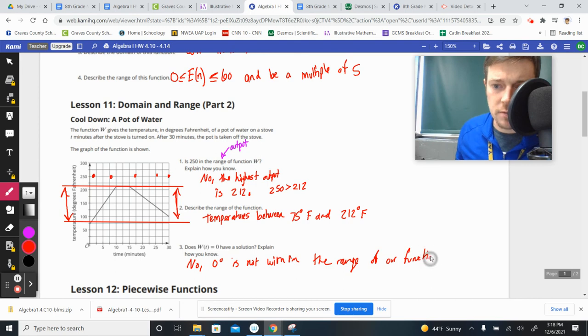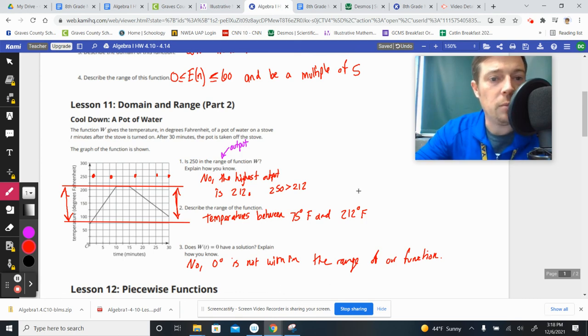Pretty simple stuff. Most of this is vocabulary. There's not any difficult math, but if you know what range means, it's all the possible outputs that our function is displaying, then we know that it can't be smaller than 75, and it can't be greater than 212,